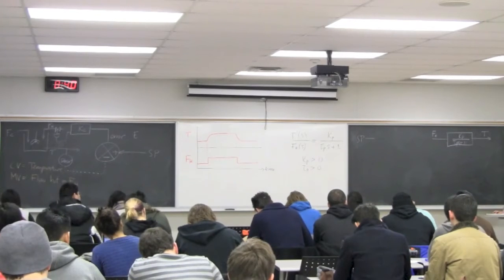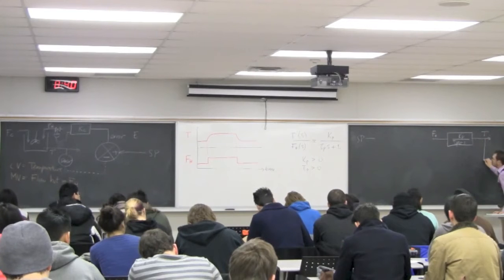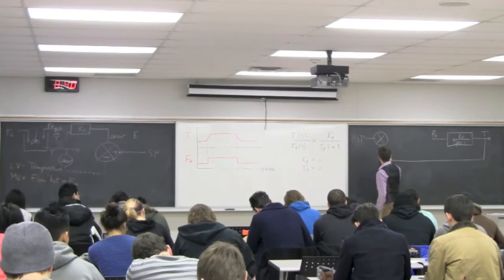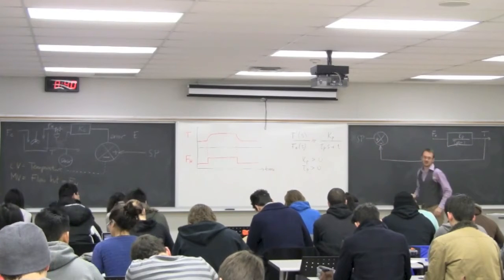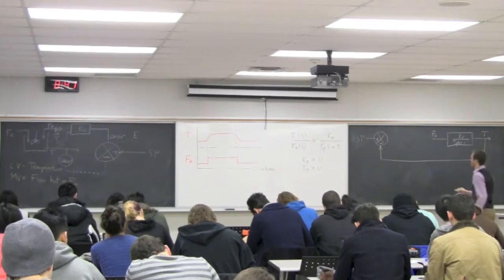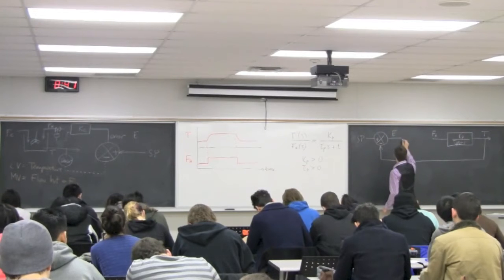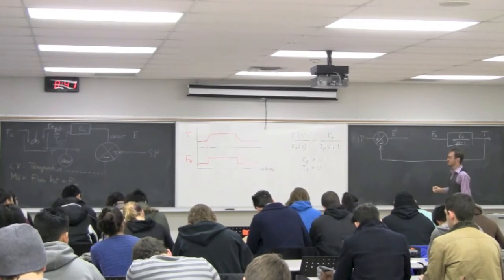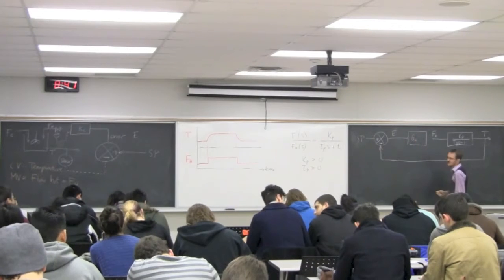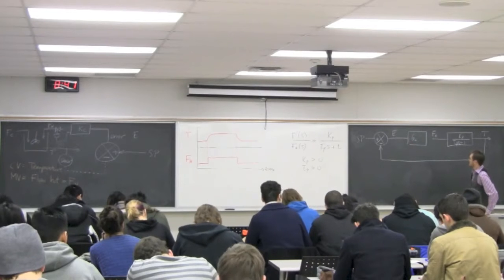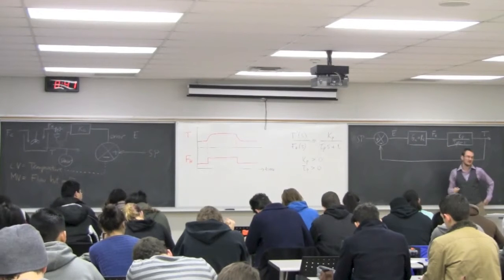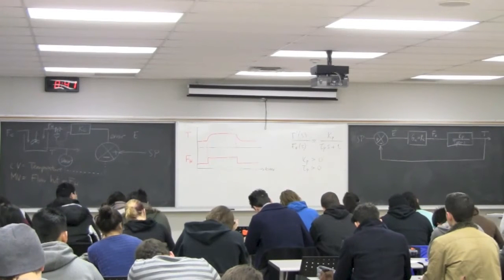That controlled variable then gets fed back around and we compare it to the set point. The set point is positive; the controlled variable is subtracted from it, forming my error. The error then is what gets fed into the controller GC. Here GC is a very simple controller — it's just a single constant value Kc: the proportional controller.